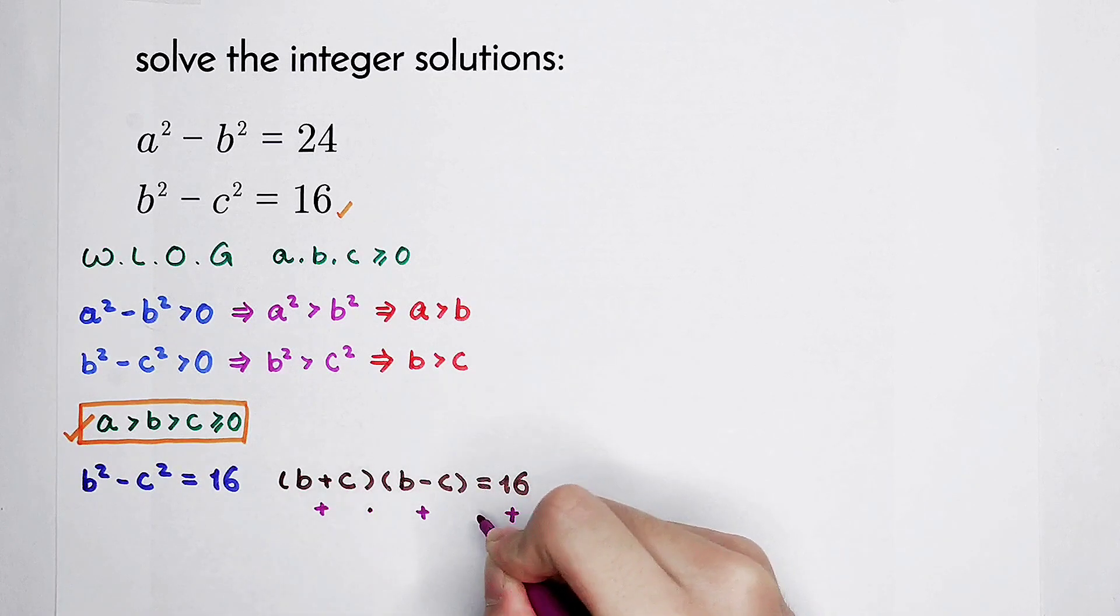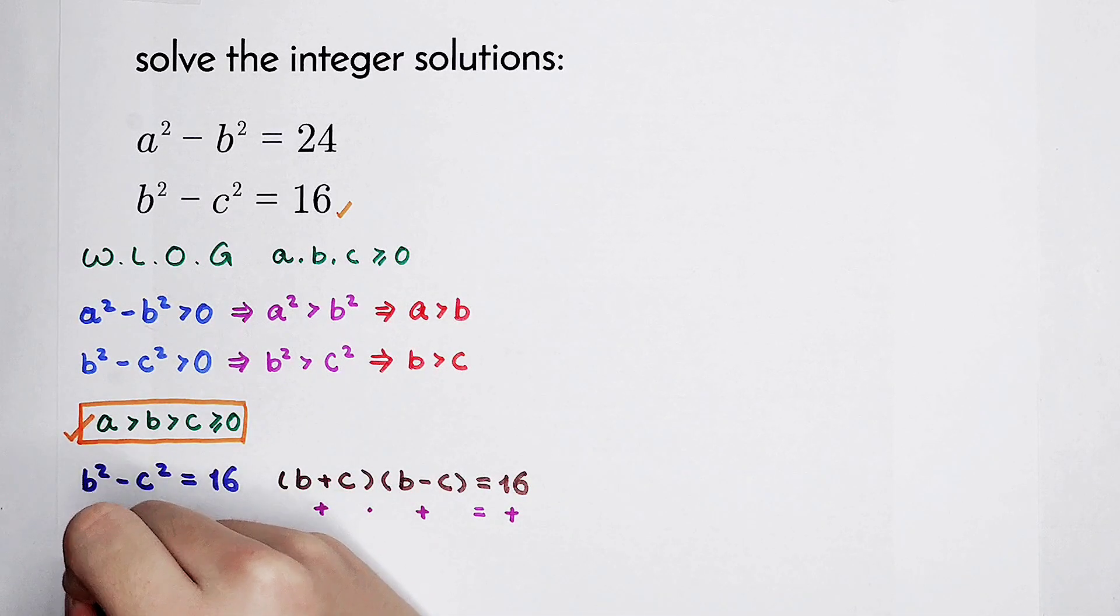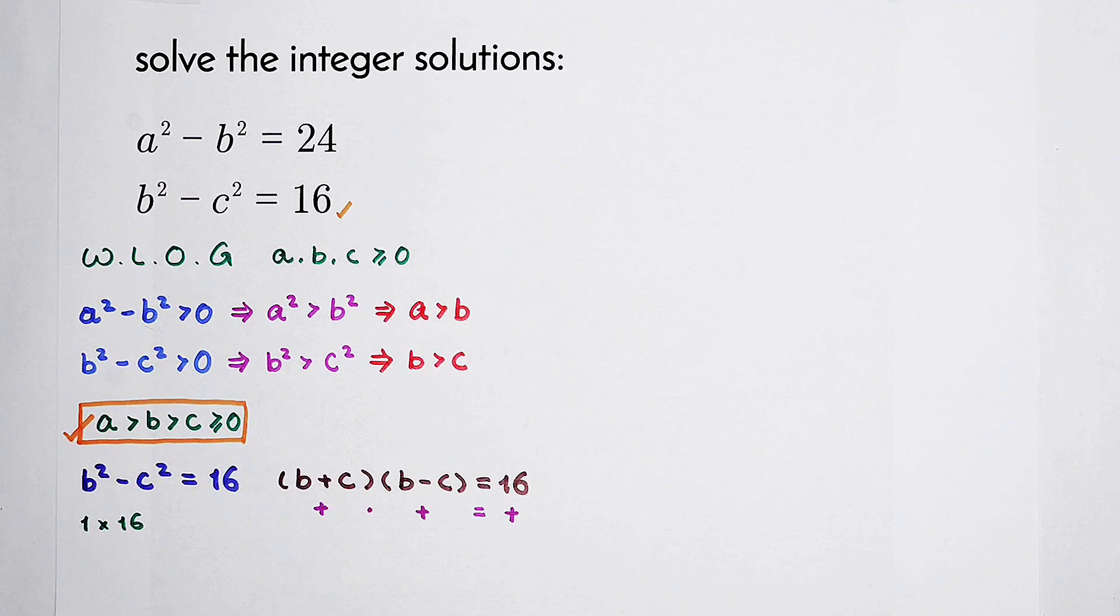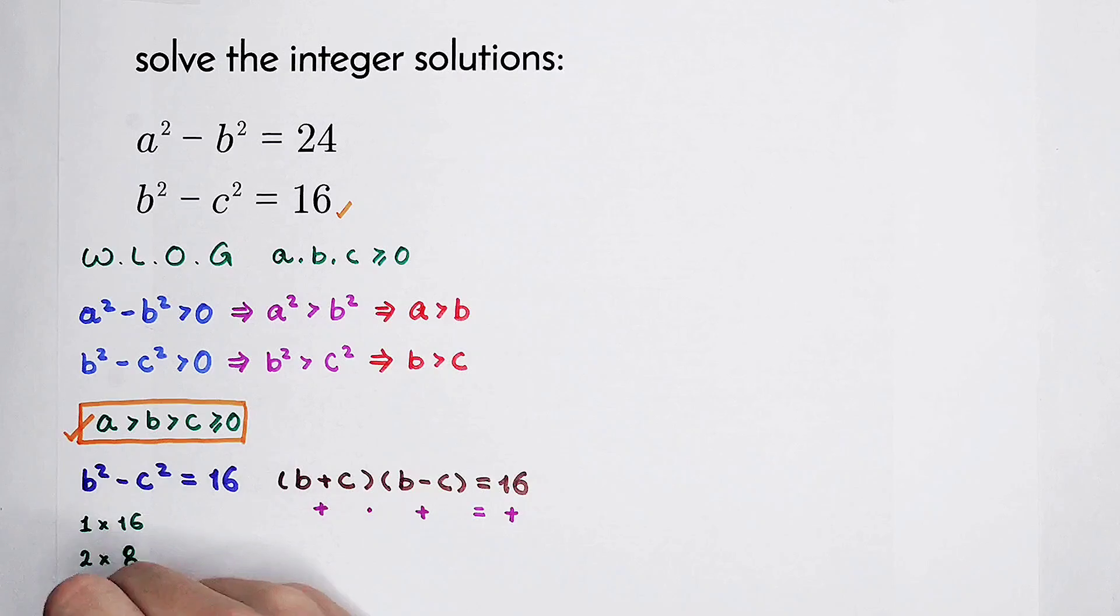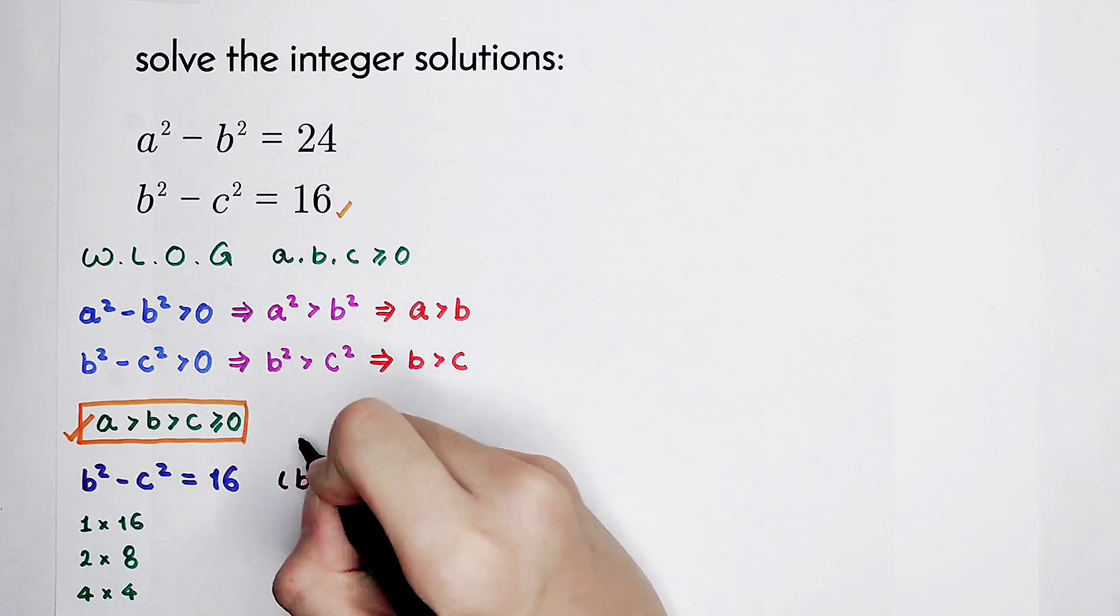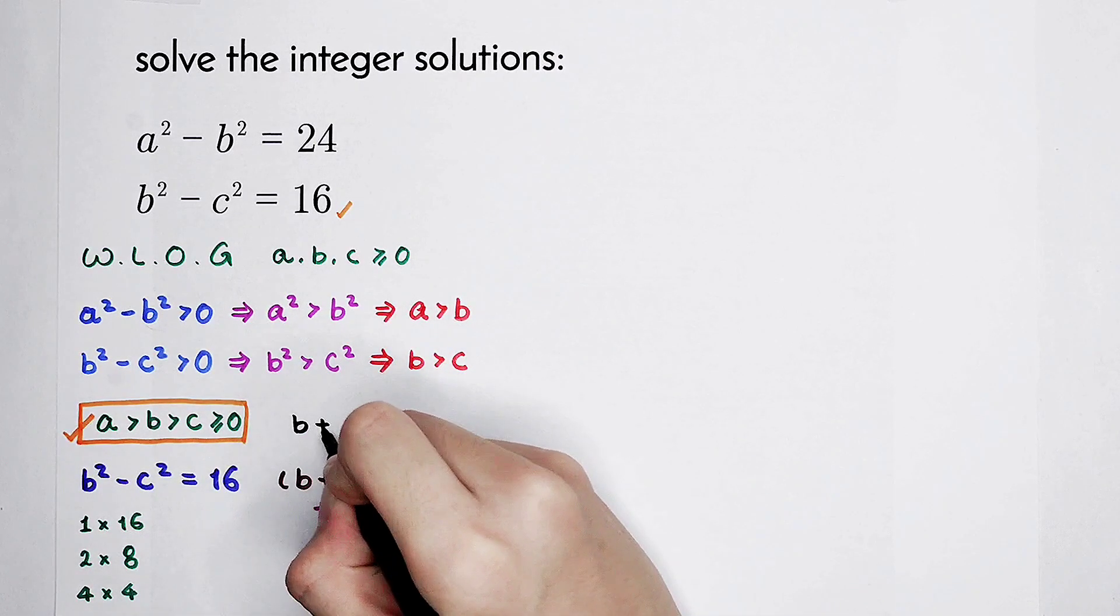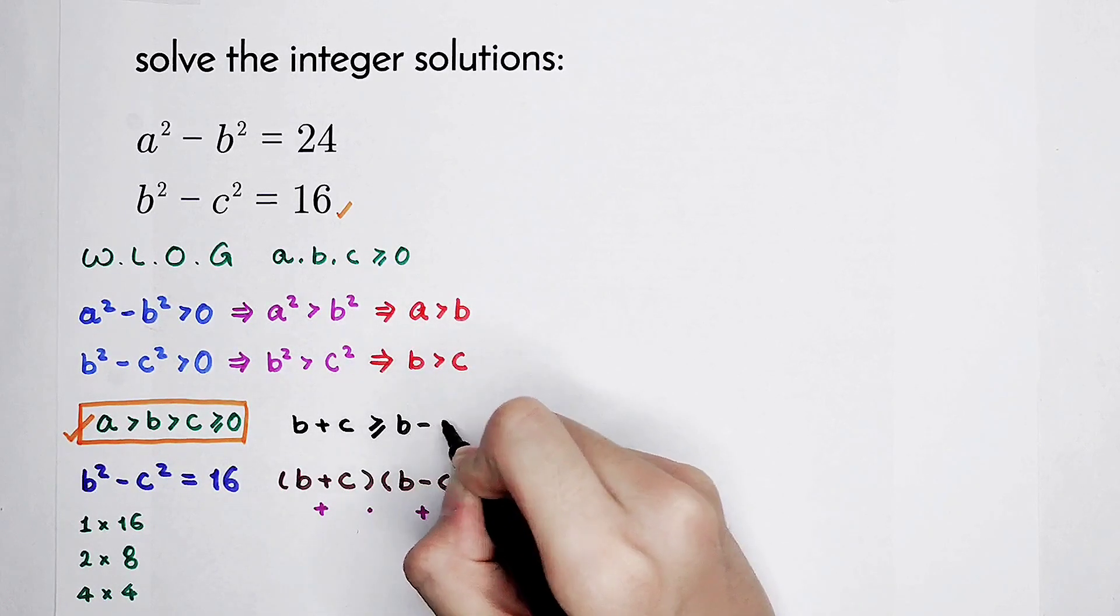Positive times positive is positive. Since 16 can be factorized as 1 times 16, 2 times 8, and 4 times 4, we also know that b plus c is always greater than or equal to b minus c.